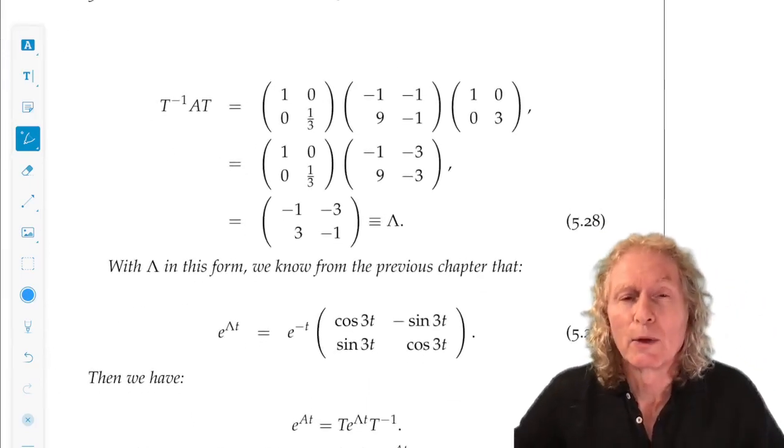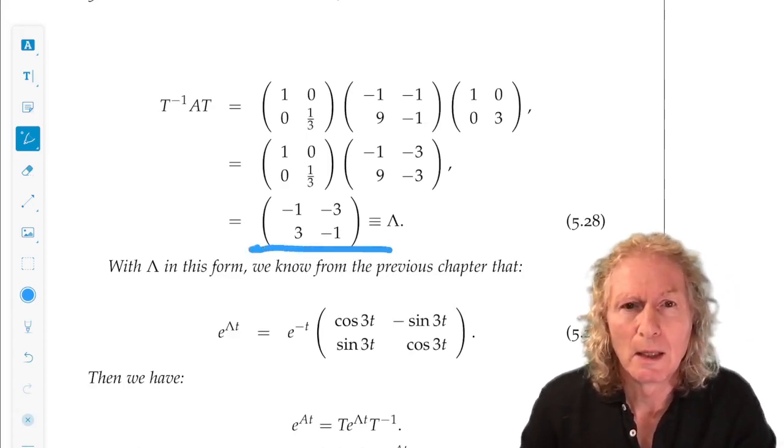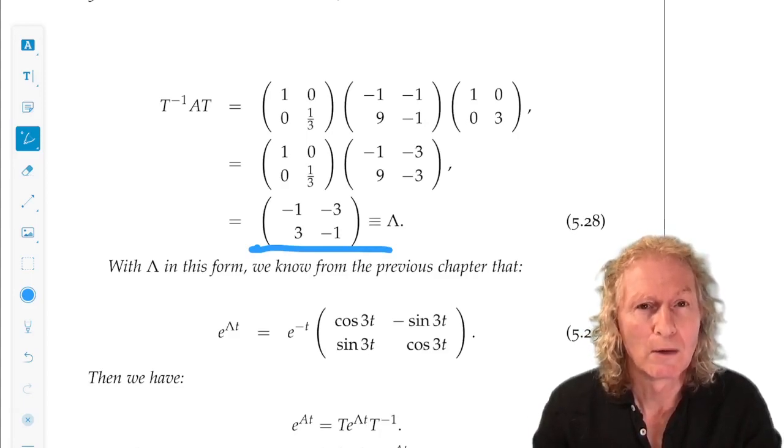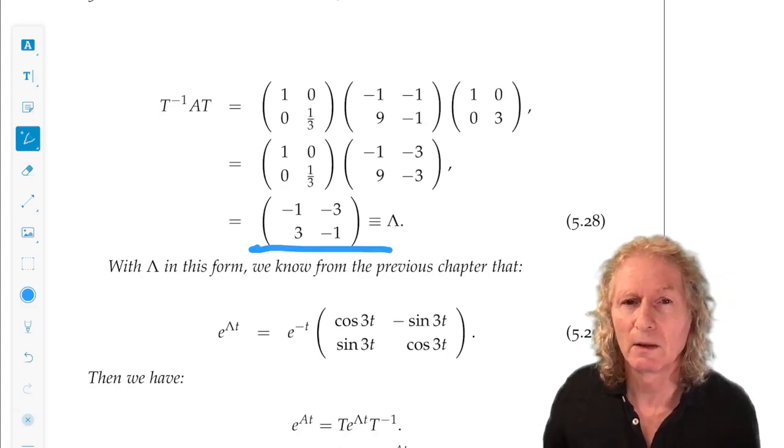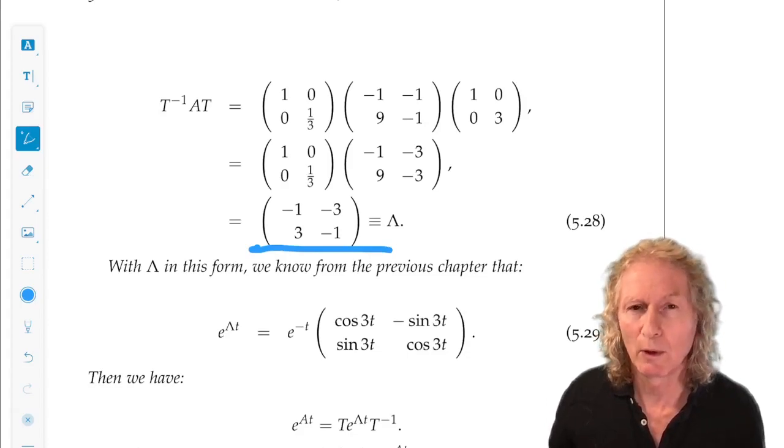We get the real parts down the diagonal, and the imaginary parts with a minus sign in the off diagonal. And that's exactly the canonical form for complex eigenvalues that I wrote down at the end of the last chapter.